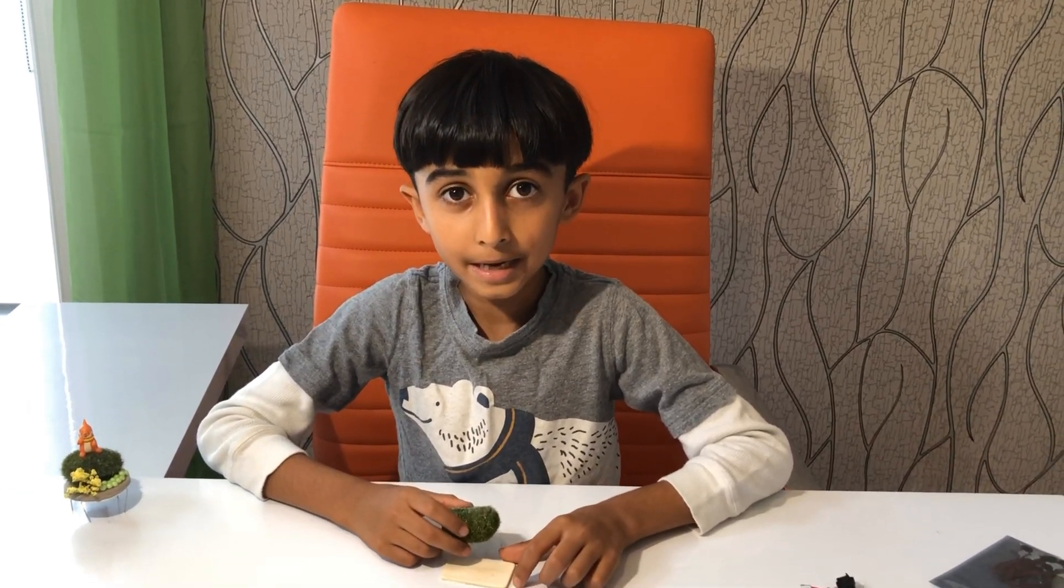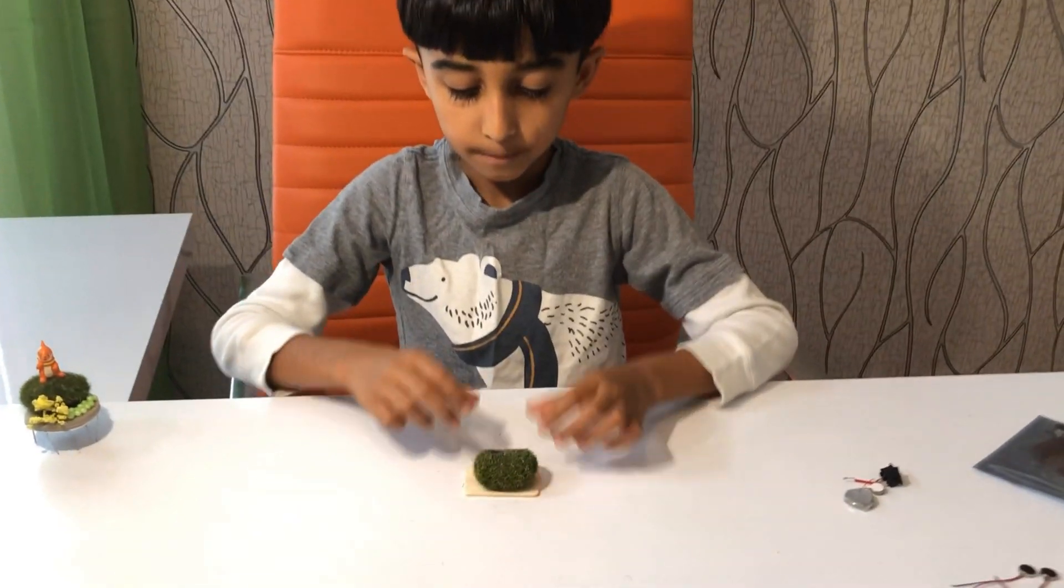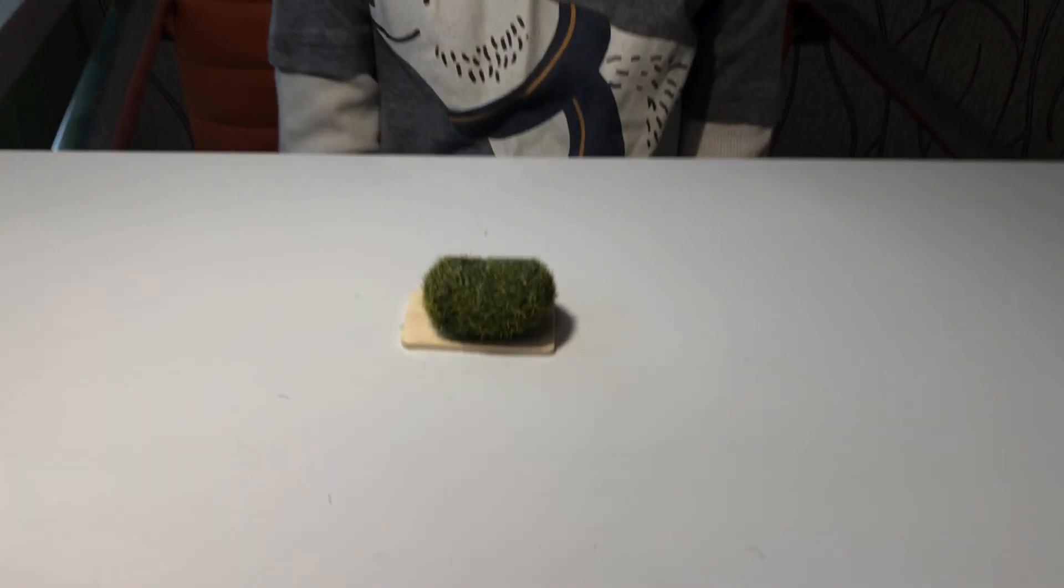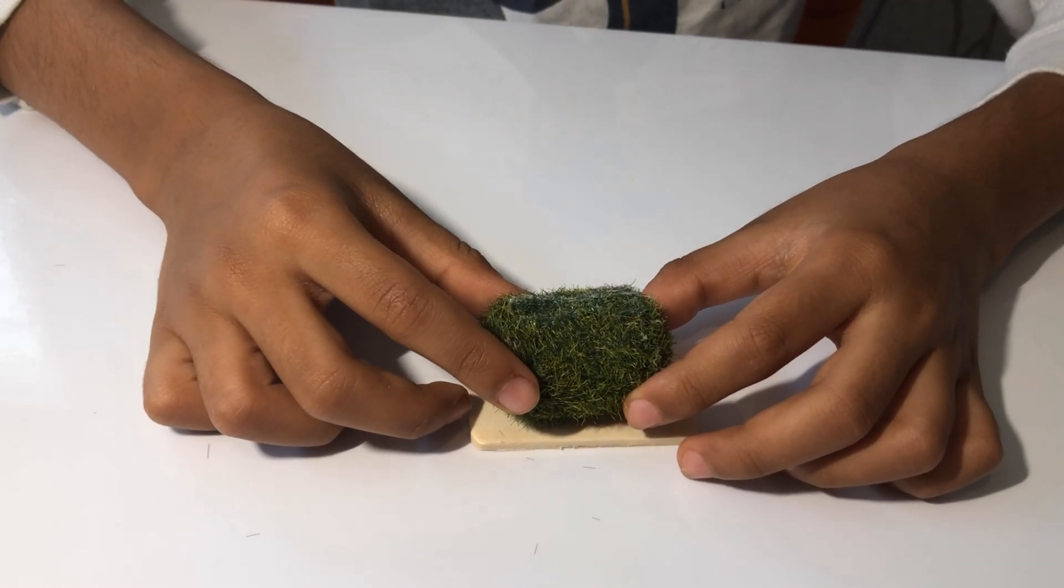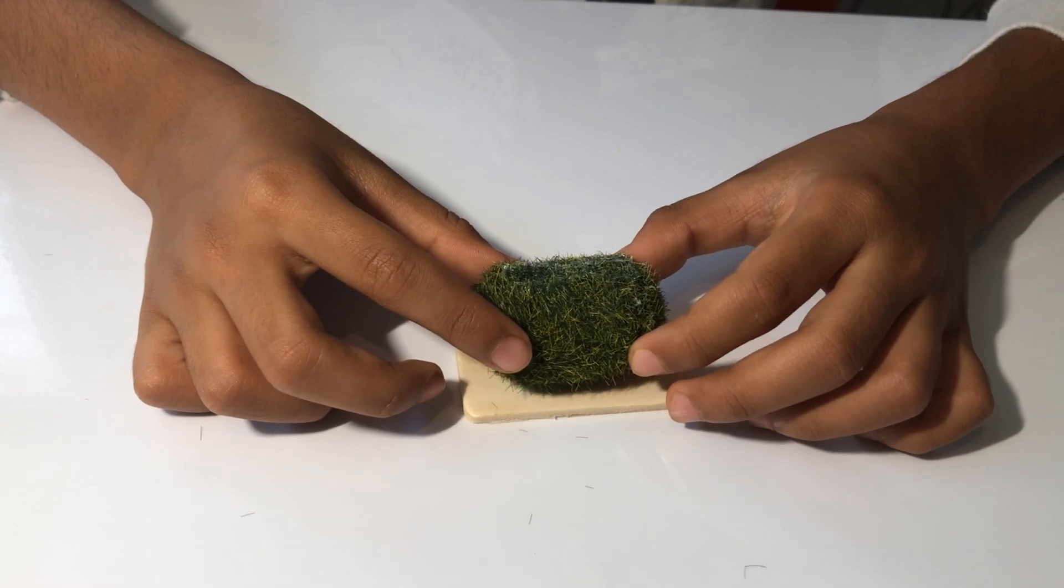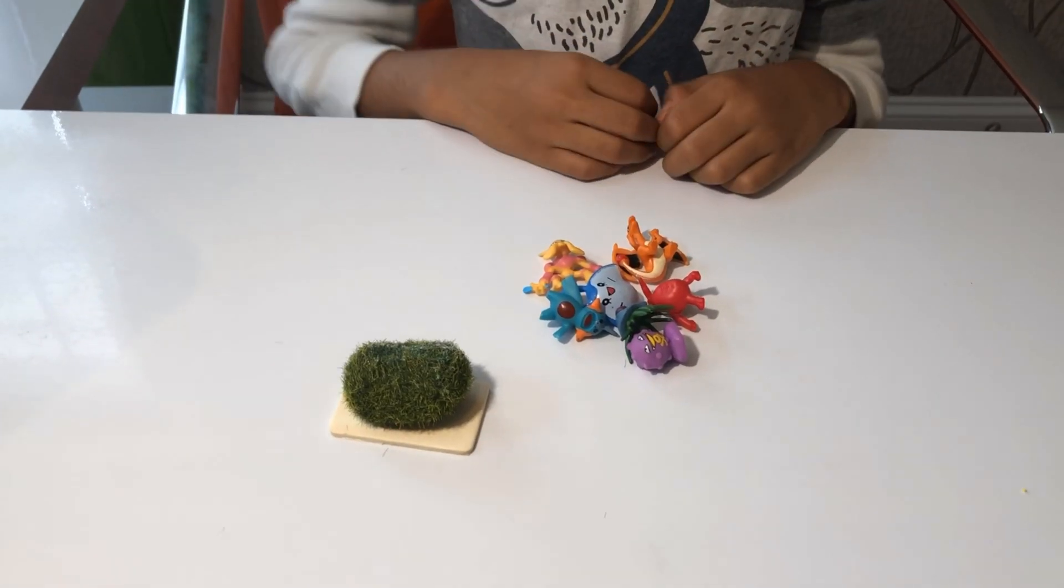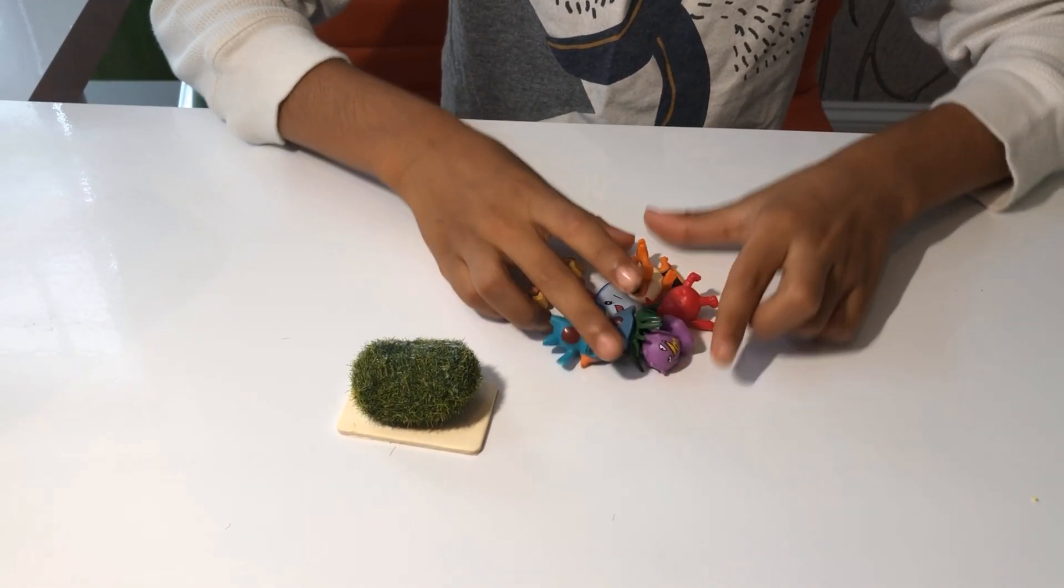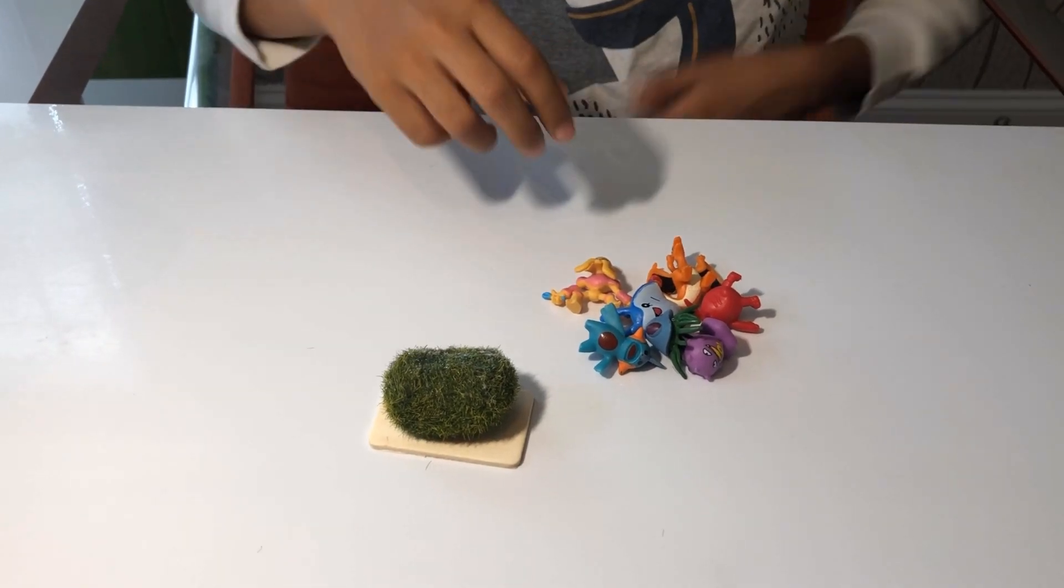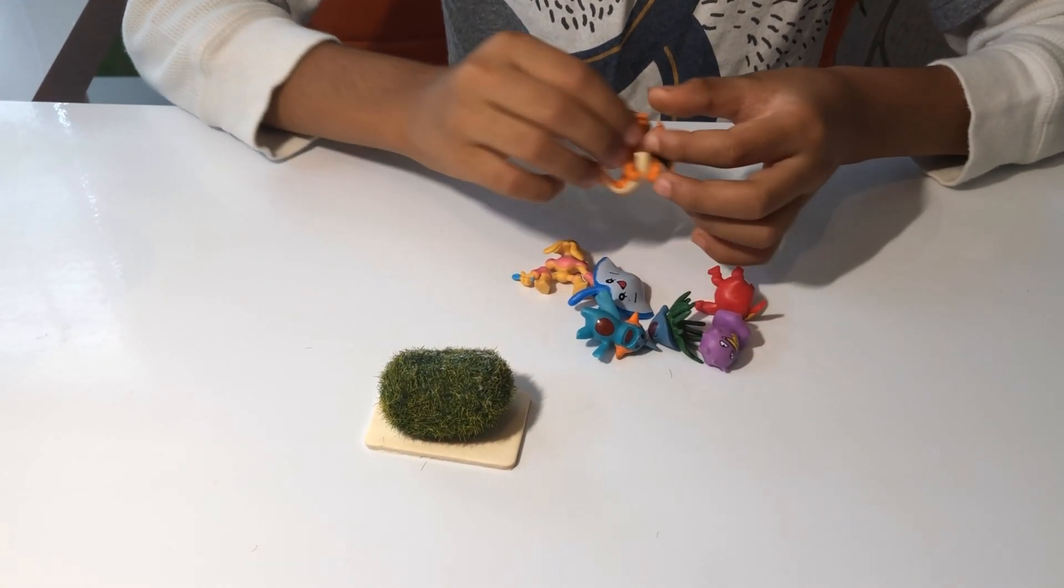Then you need a wood chip. Just to make my Pokemon stand out, I use this moss. All you need to do is stick this moss on the wood chip. Then pick your favorite Pokemon from all of these and stick it on top like this.